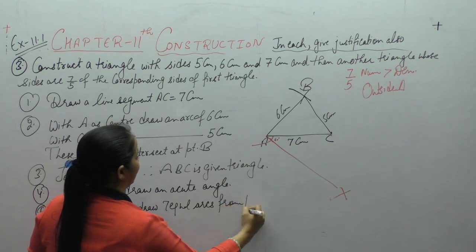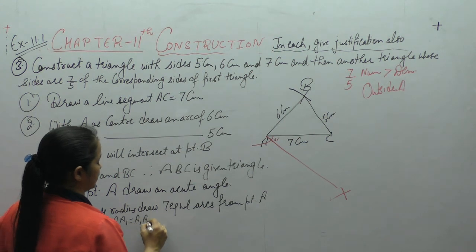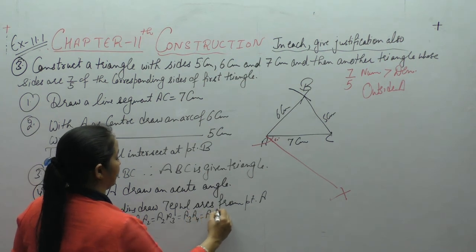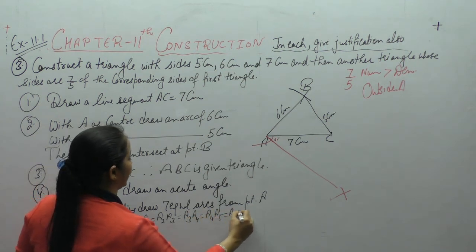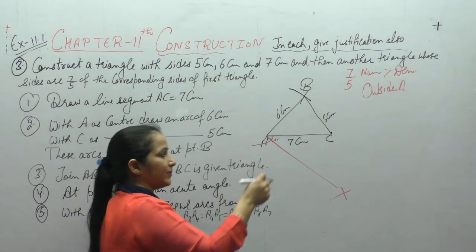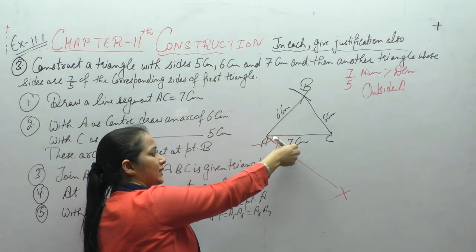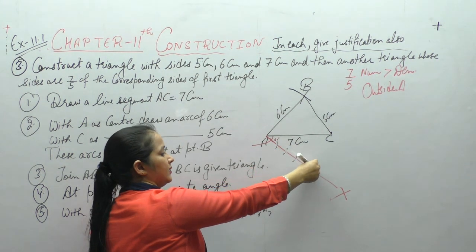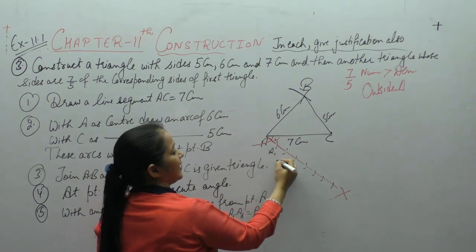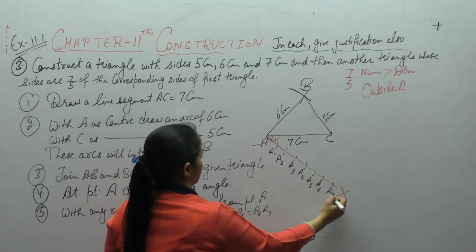किसी भी radius का compass open किया, A पर रखके A1, A1 पर A2, A2 से A3, A4, A5, A6, A7 — इस तरह सात equal arcs mark किए।